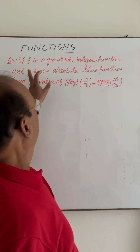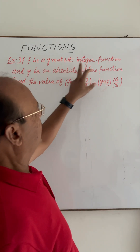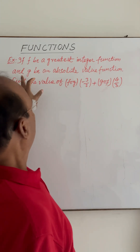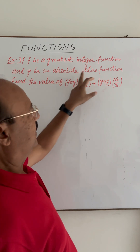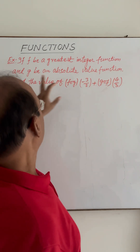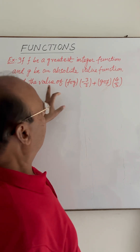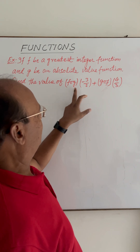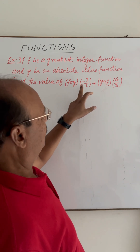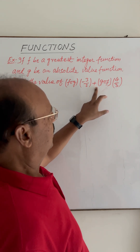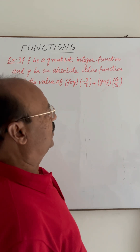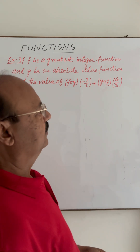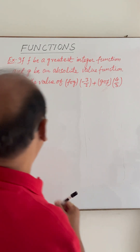Given f is the greatest integer function and g is the absolute value function, we have to find the value of f∘g(-3/2) + g∘f(4/3).